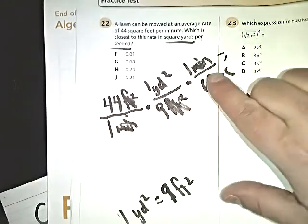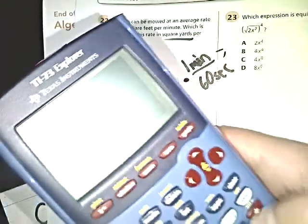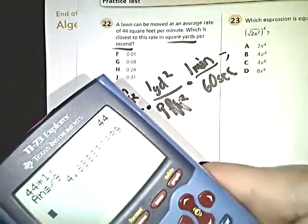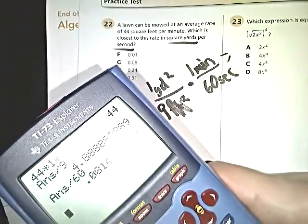That eliminates minutes because I put minutes on top. Then all I have to do is multiply out the top—44 times one times one—and then I'm going to divide that by nine and then divide that by 60 seconds.